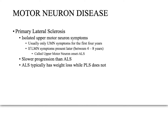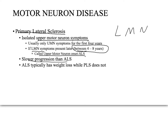There are other motor neuron diseases, most considered subtypes of ALS. Primary lateral sclerosis is isolated to upper motor neurons. Lower motor neuron symptoms, if they appear, typically do so after four to eight years, so it is sometimes called upper motor neuron onset ALS. It has a slower progression than pure ALS and, notably, does not cause weight loss the way ALS does.